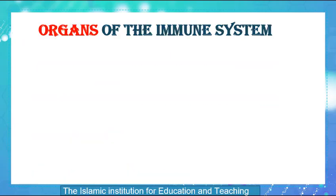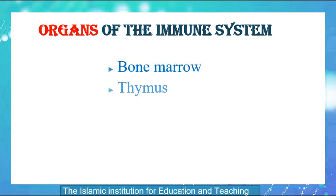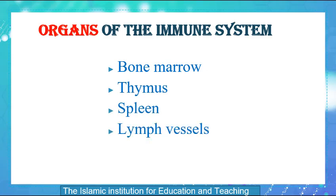The organs of the immune system that we are going to talk about today are: bone marrow, thymus, spleen, lymph vessels, and lymph nodes.